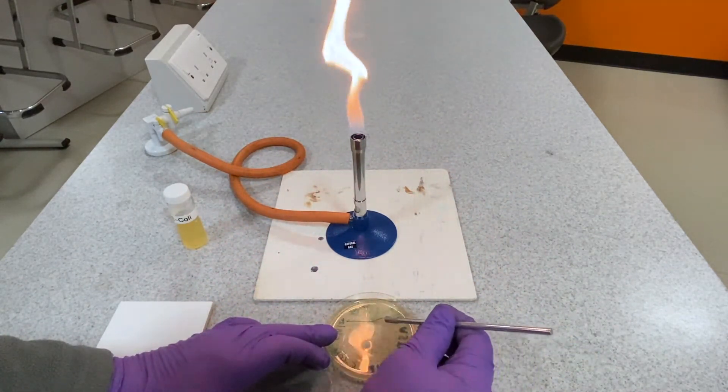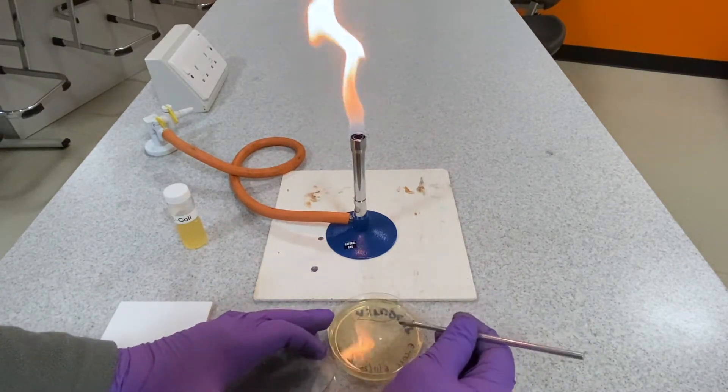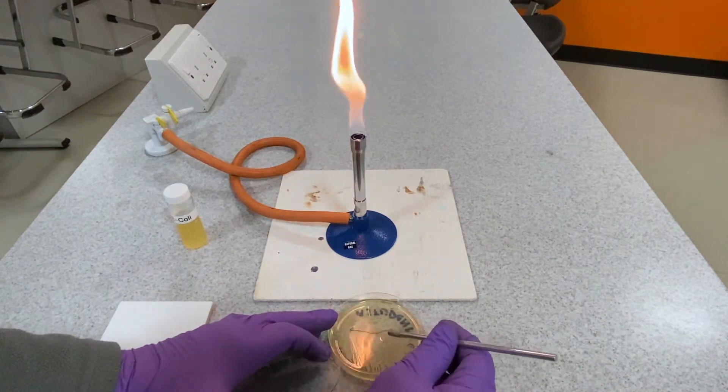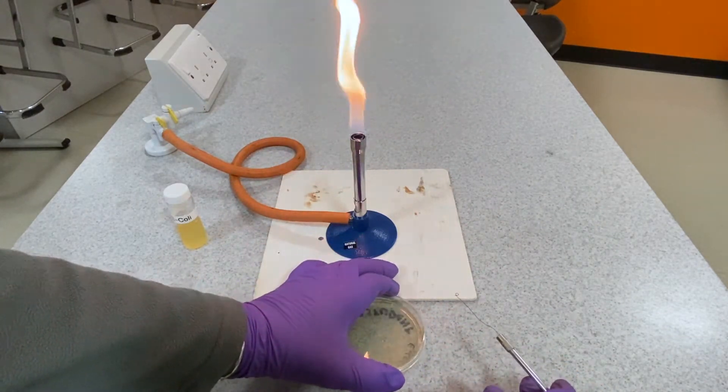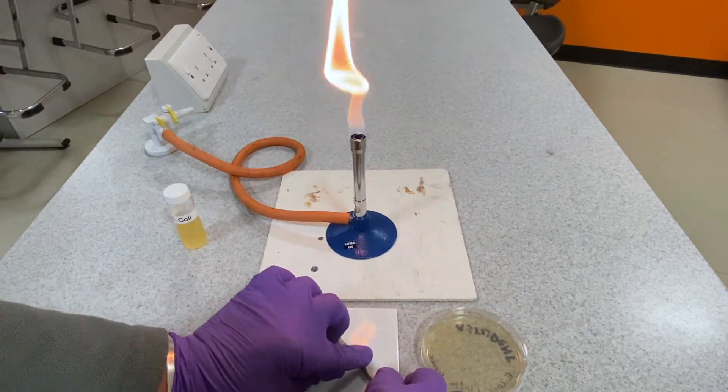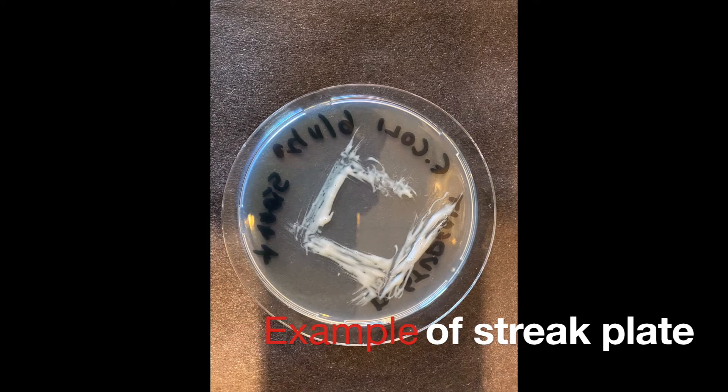The streaking is carried out in a prescribed manner: streak in the same direction whilst rotating the plate itself. Four directional streaks are carried out, each with a decreasing concentration of bacteria. The final streak direction will produce individual colonies of the bacteria.